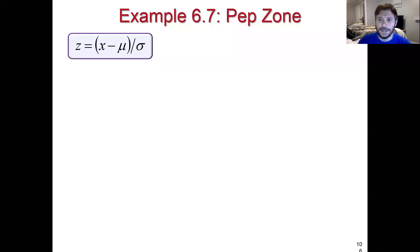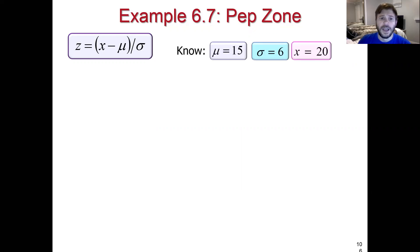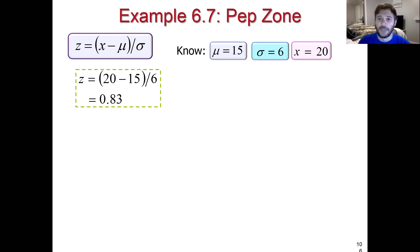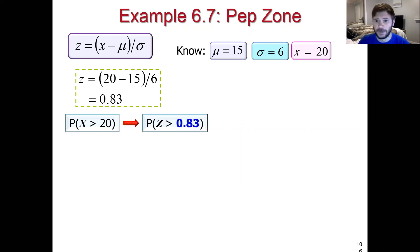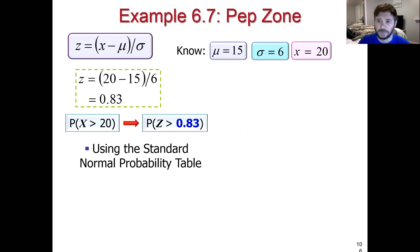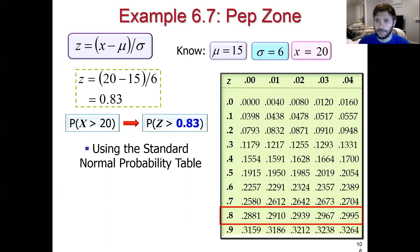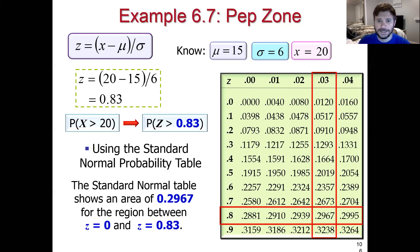Let's deal with the problem first forward, and then apply the reverse ideology. We know the mean is 15, standard deviation is 6, and our X threshold is 20. So business as usual, we convert that into a Z score: Z score is 0.83. We're asking the probability that X is bigger than 20, which is the same as asking the probability Z is bigger than 0.83. Going to the 0.8 row and 0.03 column in the standard normal table, the area between 0 and 0.83 is 0.2967.